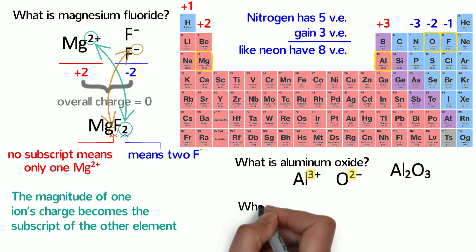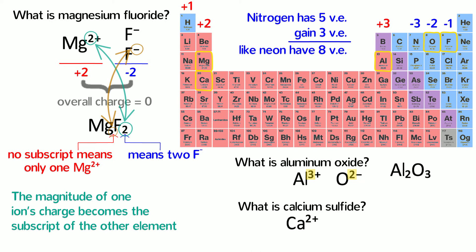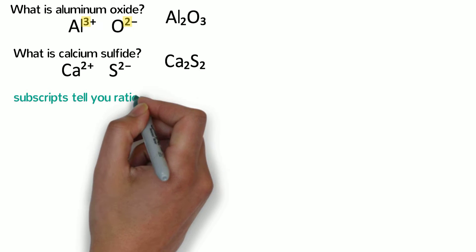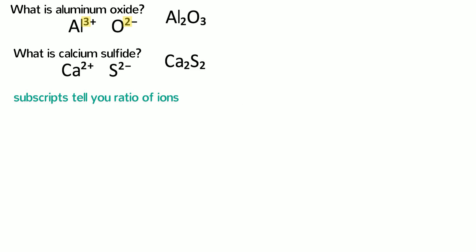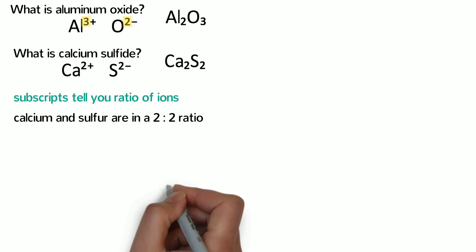Let's try one more. What is the formula of calcium sulfide? Calcium ions have a positive 2 charge, and sulfide, just like oxide, has a negative 2 charge. That means the formula of calcium sulfide should be Ca2S2. However, keep in mind those subscripts tell you the ratio of the ions. So this formula means calcium and sulfur are in a 2 to 2 ratio. A 2 to 2 ratio, of course, is the same as a 1 to 1 ratio.